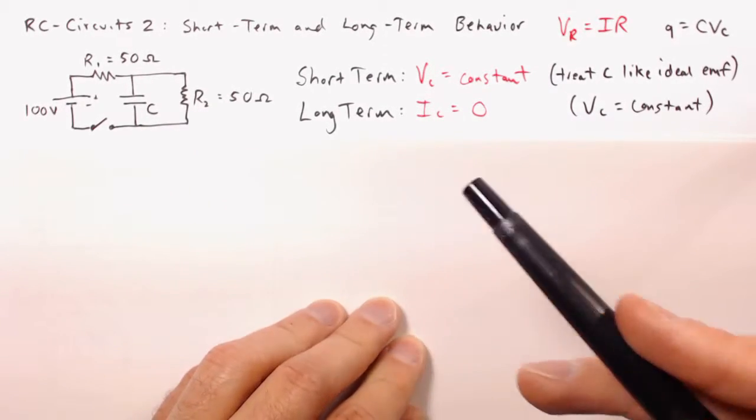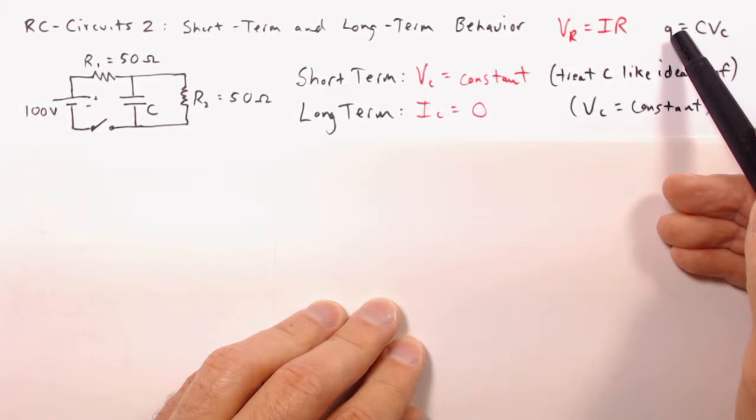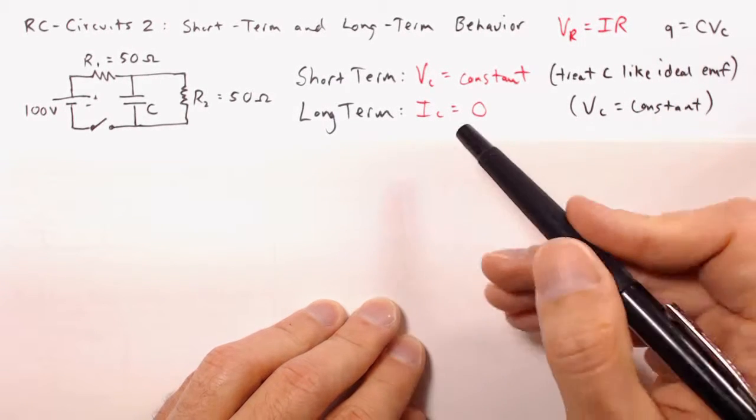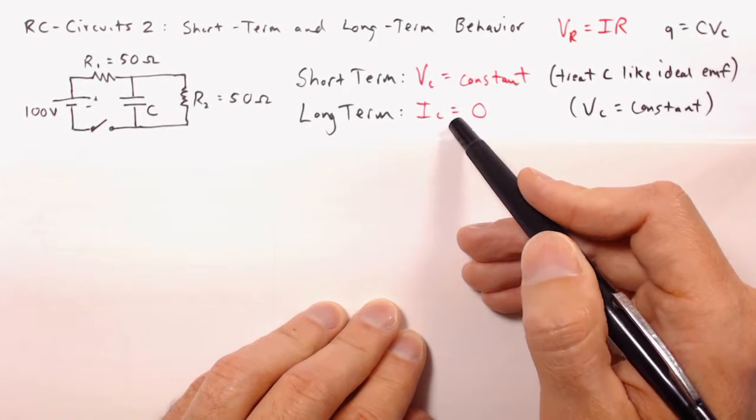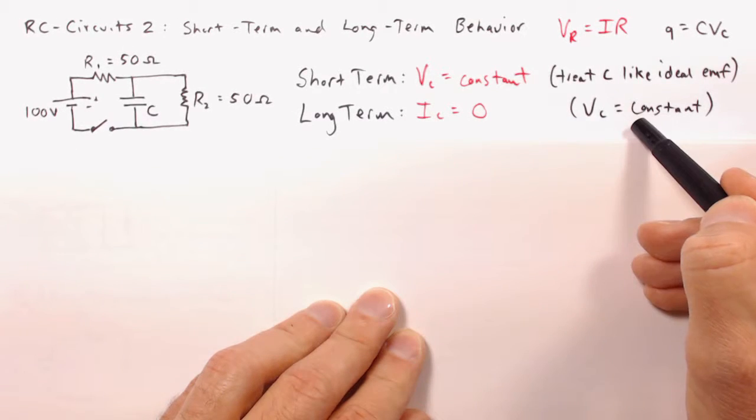Now, a constant voltage in a capacitor implies constant charge, and that's not going to stay constant unless the current is zero. So in the long-term, the current through every capacitor is always going to be zero, and of course, the voltage will be constant as well.